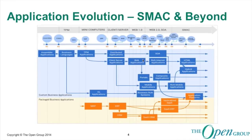If you look at application evolution so far, there has always been an influence of technology change on applications. Each computing era, as you can see in the diagram, is defined by a technology reception, and that has resulted in how applications are architected. What we are currently calling SMAC — social, mobility, analytics and cloud — is one such computing era which is happening now, and which will have a lot of influence on how applications are architected.